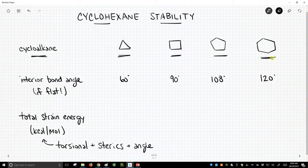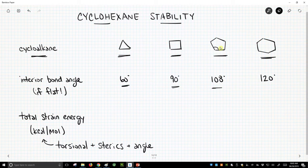And if these were flat structures, and that's a big assumption, then they would have interior bond angles of 60 degrees for cyclopropane, 90 for cyclobutane, 108 for cyclopentane, and 120 for cyclohexane.